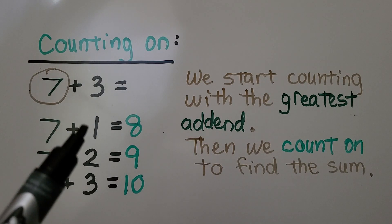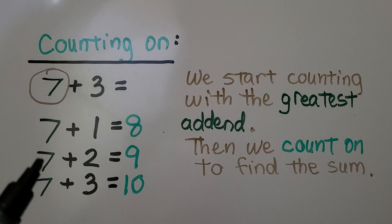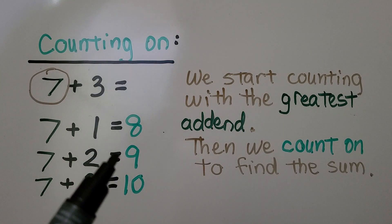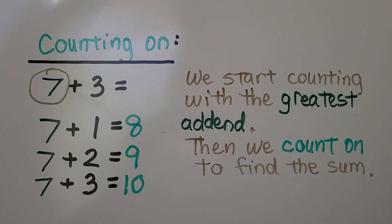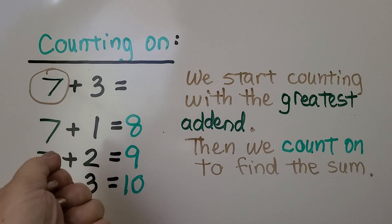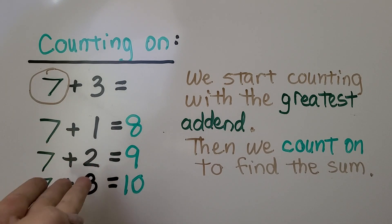7 plus 1 is equal to 8. 7 plus 2 is equal to 9. 7 plus 3 is equal to 10. We can also start with 7 and say 8, 9, 10.